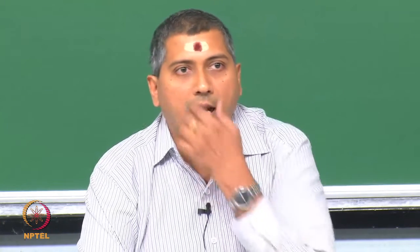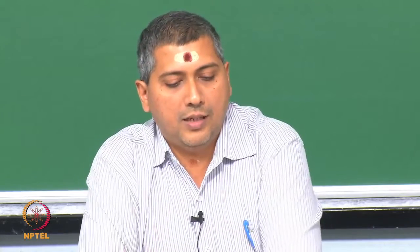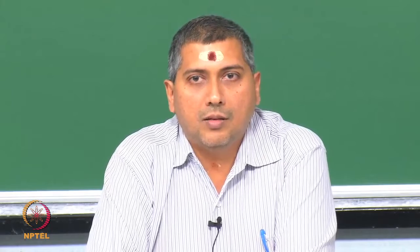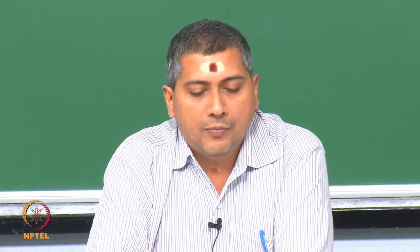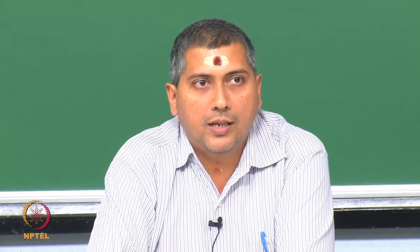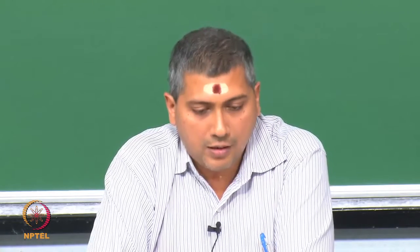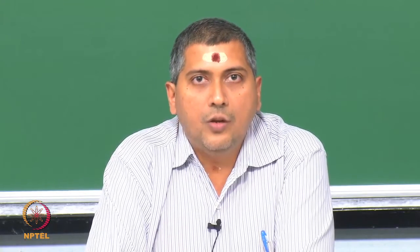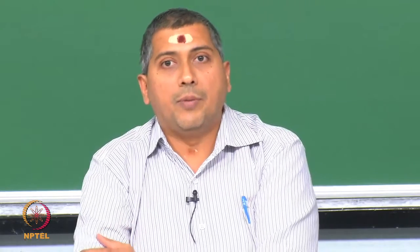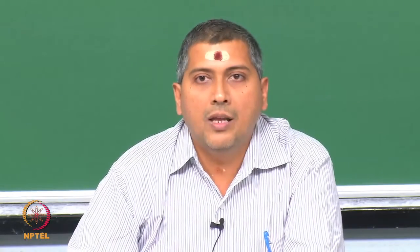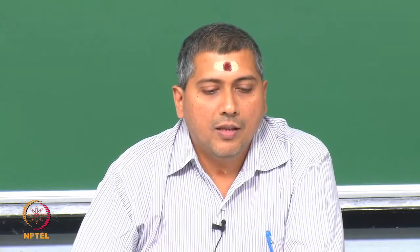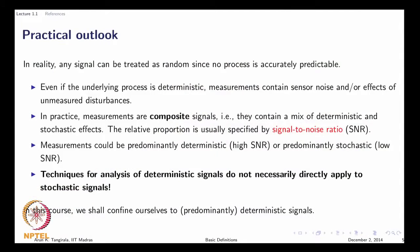There are several examples in real life that fall into the category of random signals — in engineering where you have disturbances, and in economics such as stock market prices. In reality, there exists no signal that is accurately predictable, which means all signals we encounter in reality are random. Then why do we deal with deterministic signals? Because many measurements and processes we encounter have a deterministic nature as well, even if the true process contains some randomness.